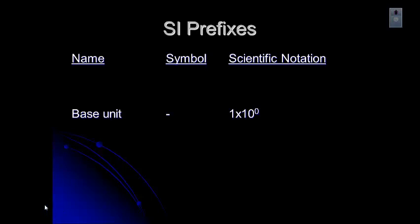So let's start with our base unit. There's no symbol for that, so that would be your standard unit, like liters or meters. And the scientific notation is 1 times 10 to the 0. Hopefully you remember that 10 to the 0 is 1, so there's no scientific notation that goes along with that. It's just multiplied by 1.